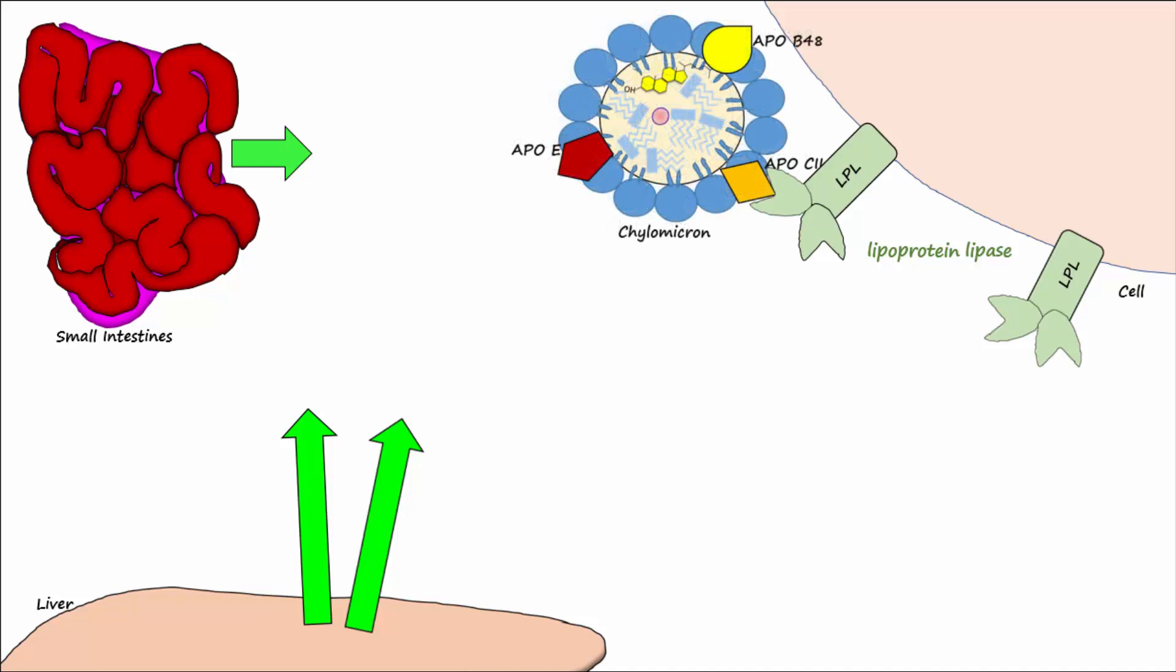LPL hydrolyzes the triglycerides from the chylomicron into free fatty acids and glycerol that can now cross over the plasma membrane. Once inside the cell, the fatty acids and glycerol can be reassembled into triglycerides and stored or be used by the cell for energy.